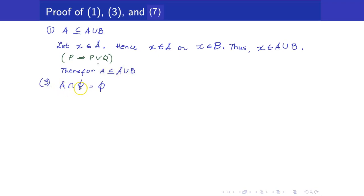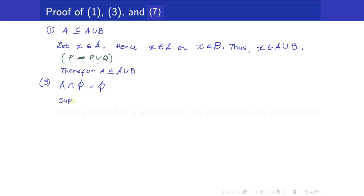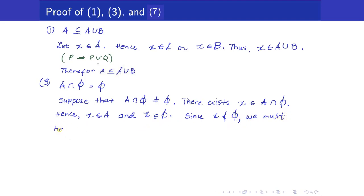Next, we will show that A intersection the empty set is the empty set. When showing a set is empty, it is good to proceed by contradiction. Suppose A intersection the empty set is not empty — then there exists at least one element X in A intersection the empty set. By definition, X belongs to both sets, so X is in A and X is an element of the empty set. This is a contradiction, since no element can belong to the empty set. Therefore, A intersection the empty set must be the empty set.